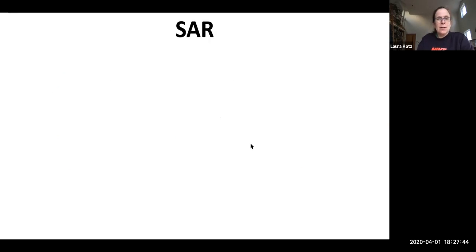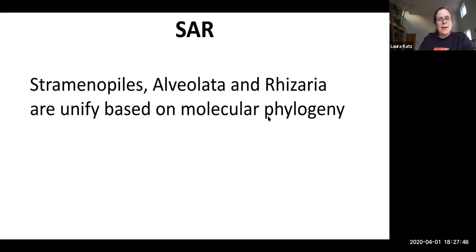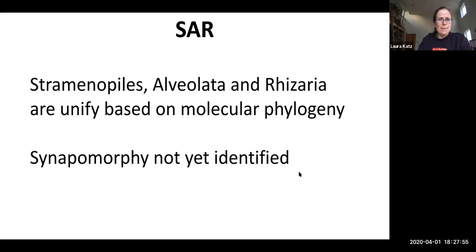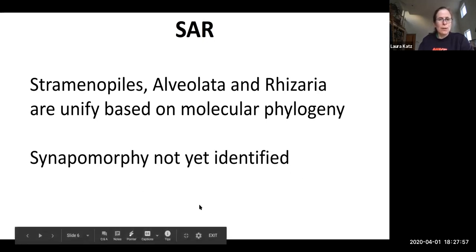As we learned in our major clade presentations, alveolates have these alveoli, which are these sacs used to form the plates in dinoflagellates and are part of the outer cell structures of ciliates. All alveolates have alveolar sacs. The synapomorphy for rhizaria is, we don't know. And the synapomorphy for SAR is, we don't know. Basically this group has emerged by analyses of molecular phylogeny.